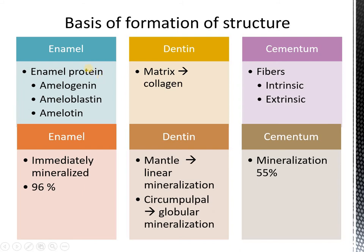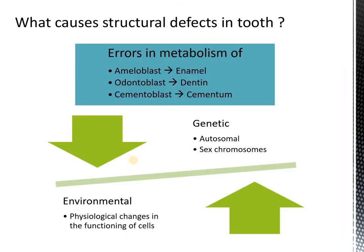We need to understand the basis of all of these to be able to identify the differences in the structure of the teeth. Whenever there is an error in the metabolism of these proteins, if the cell involved is an ameloblast, you will have abnormal enamel. If the cell involved is an odontoblast, you will have an abnormality in dentine. Similarly for cementoblasts in cementum. These cells can be influenced not only by genetic factors, which are the X and Y chromosomes mostly, but also by physiological changes of the functioning of the cells.